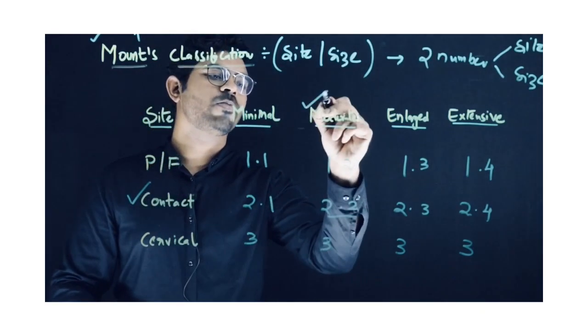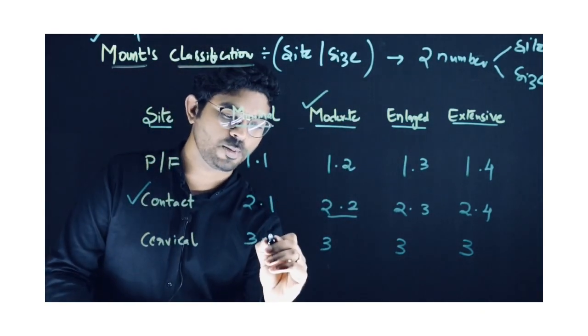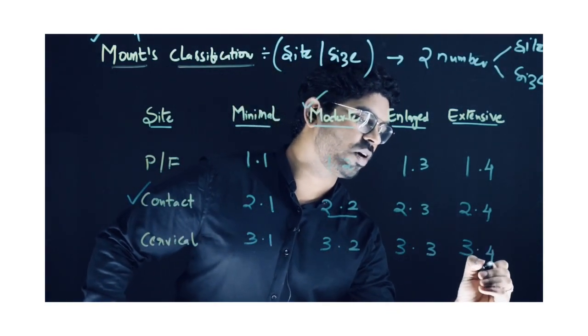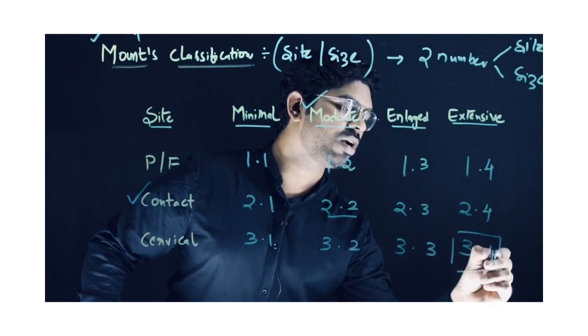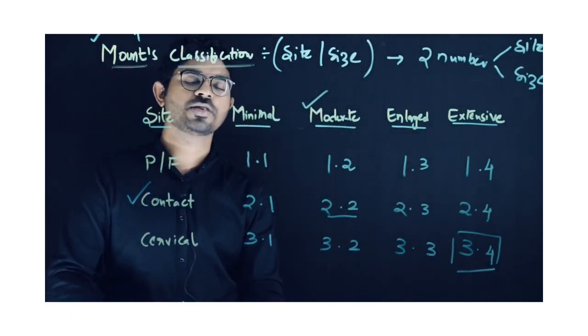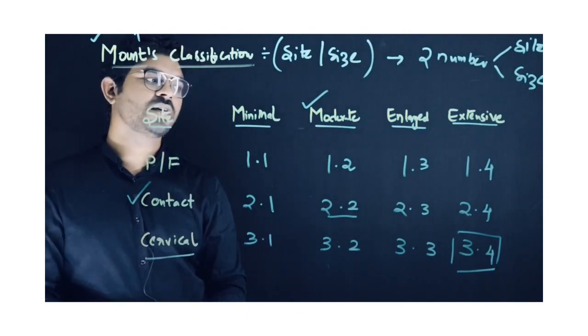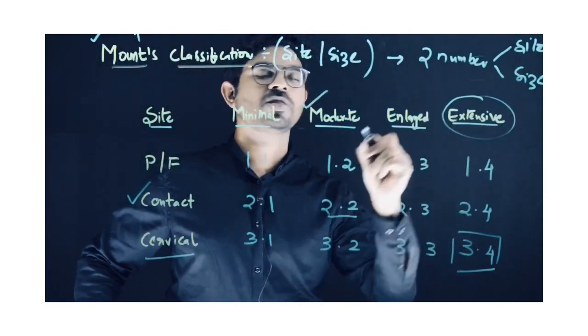proximal surface and is moderate caries. Next is 3.1, 3.2, 3.3, and 3.4. For example, if according to Mount's classification it's diagnosed as 3.4, it means it's cervical caries which is extensive, which